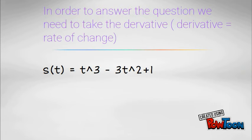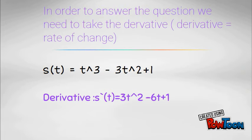In order to answer the question, we need to take the derivative. The derivative is 3t squared minus 6t plus 1.